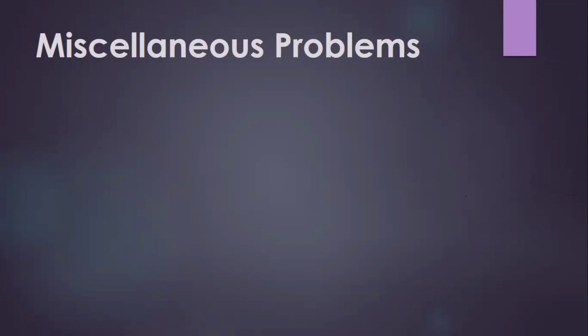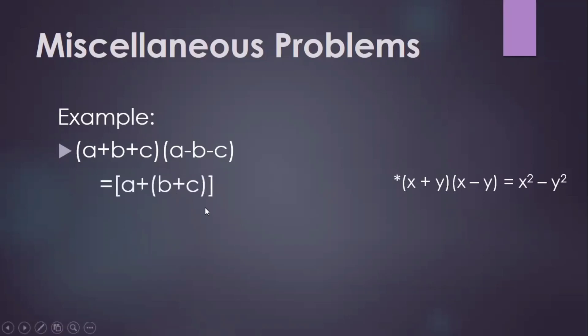Let's try another example. Say we have a plus b plus c multiplied to a minus b minus c. So again, let's apply this formula that will result to the difference of two squares. In here, let us group b plus c as well as in the second factor.